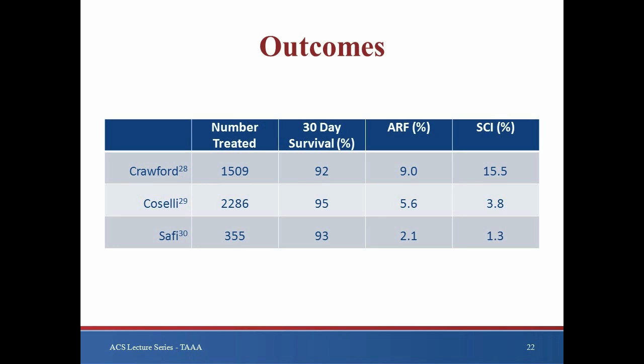Coselli's group published a series of nearly 2,300 consecutive TAAA repairs with an exemplary 95% 30-day survival and greatly reduced rates of acute renal failure and spinal cord ischemia. The drastic reduction in perioperative complication rates related to acute renal failure and spinal cord ischemia are attributed to selective cold crystalloid perfusion of the kidneys and CSF drainage, respectively. Safi's group reported similar results using the same adjuncts. Houston's combined efforts have created a new standard for mortality and perioperative complication rates in modern open TAAA repair. A summary of these studies is included in the table. It is interesting to note that the highest survival published to date was also the largest series ever reported, indicating that high-volume centers can achieve the best outcomes in this disease process.